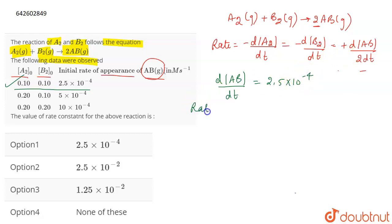But what will be the rate? This is the rate of appearance of AB. But for the rate of the reaction, this is the value that you have. Rate of the reaction will be the concentration of D AB by 2 DT. So, actually, the rate of the reaction will become 1.25 into 10 to the power minus 4 molar second inverse.